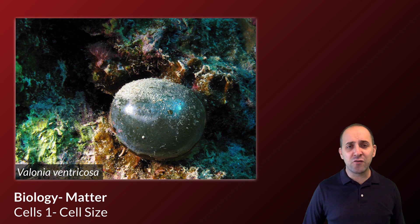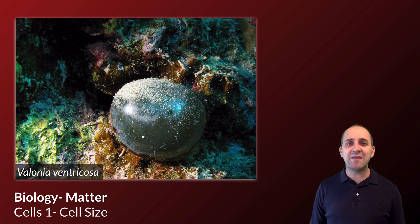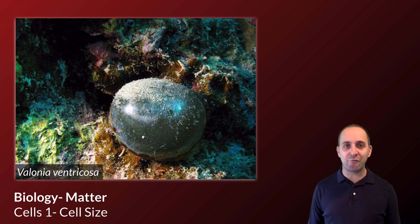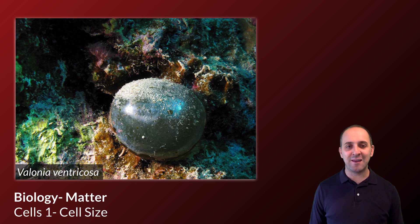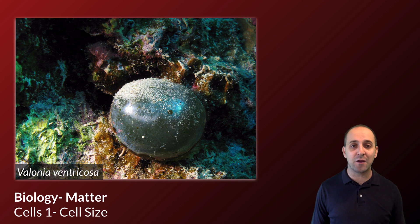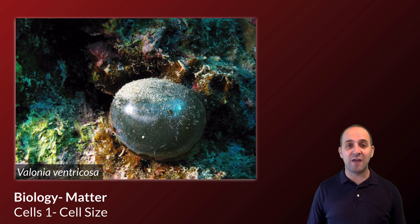So this is Valonia ventricosa. It is a type of algae. It's about four inches long, and it is about as big as any one single cell could ever get. There are limits on why cells can't get any bigger than something like this, and even this is incredibly rare. Most cells are microscopic, and those limits are what we're going to talk about in this video — the limits to cell size.